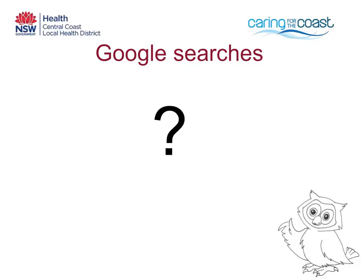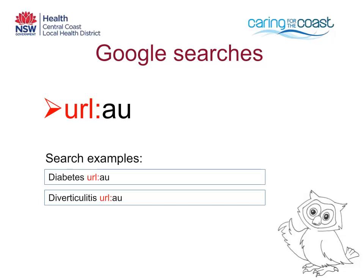One way is to search smart using these Google search tips and tools. By typing URL colon AU after your search term, Google will limit your results to predominantly Australian content only.